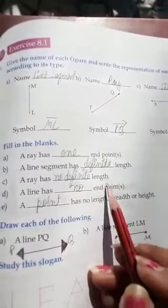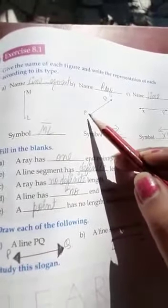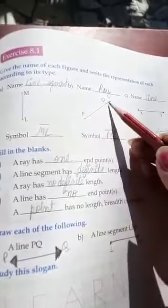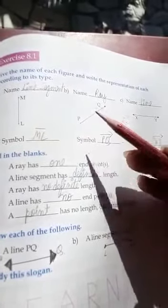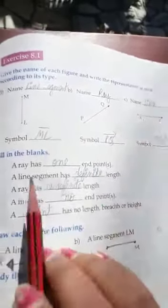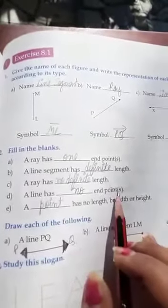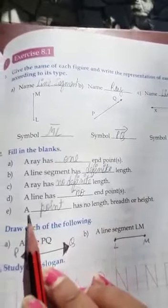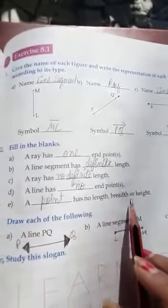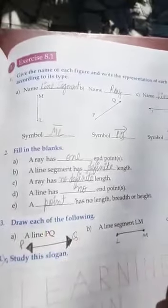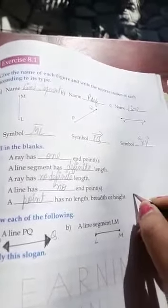Part C: a ray has no definite length, as only one end point is there and the other point can be extended up to infinity, so it doesn't have any definite length. Part D: a line has no end points. Part E: a point has no length, no breadth, and no height, because a point is represented only by a dot.